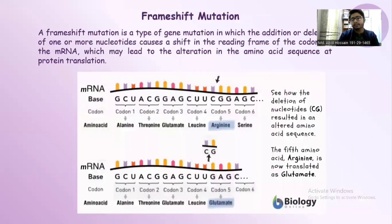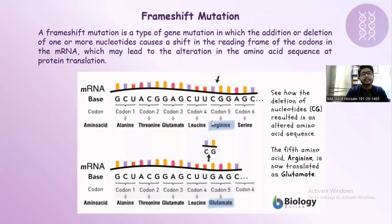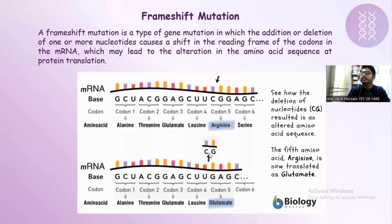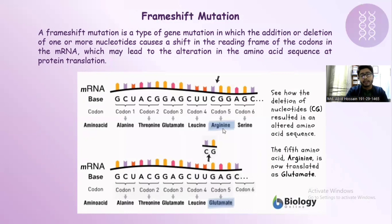Frameshift mutation is a type of mutation where any kind of addition or deletion happens. One or more nucleotides cause a shift in the reading frame of the mRNA, leading to an alternative mRNA sequence and protein transcription. For example, codons for arginine can be converted to glutamate after a deletion event, because the reading frame shifts and produces a GAG codon responsible for glutamate.